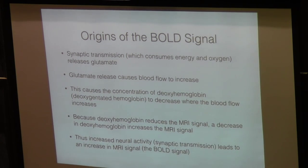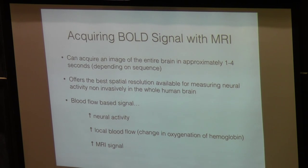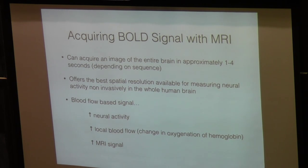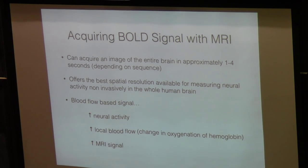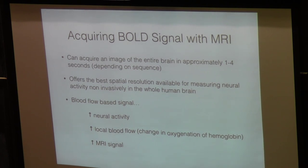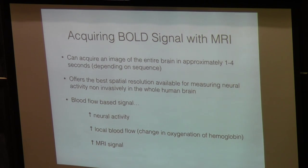With this technique we can acquire the entire brain volume at a resolution of 1 to 4 seconds — we can look at activity of the entire brain every 1 to 4 seconds. In contrast to recording from neurons, that's really slow: when you record from neurons you're recording on the order of milliseconds, whereas with MRI you're looking at between 1 and 4 seconds. That means you need to design tasks that can discretely capture what the brain is doing.